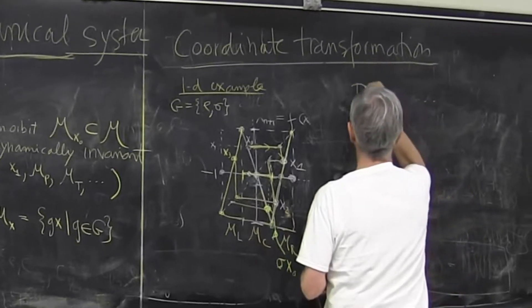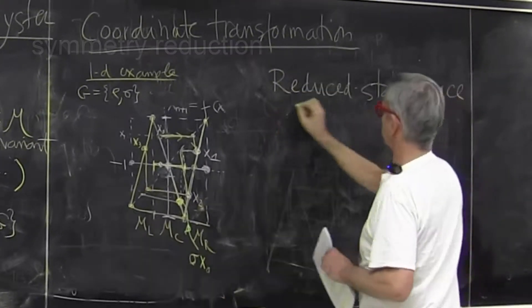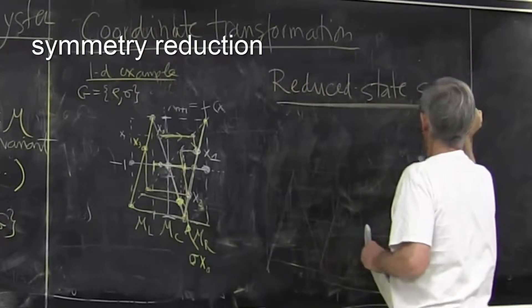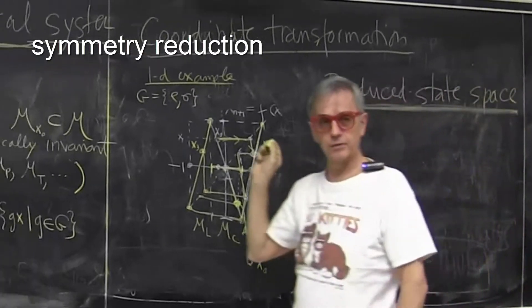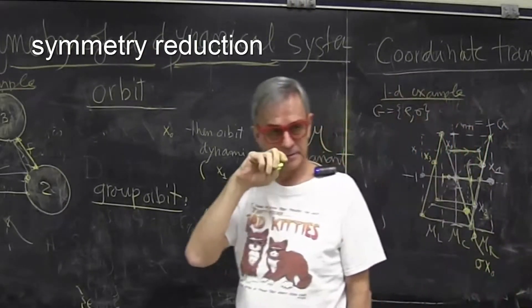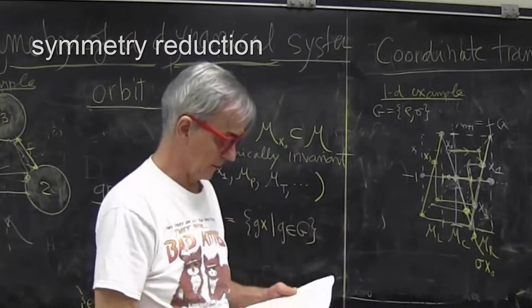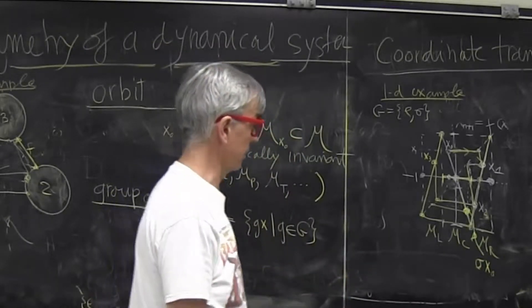Now comes the key notion. And for discrete groups, this is something very intuitive, so you'll really understand it. For continuous groups, as you'll find out, it's a little bit harder to visualize.